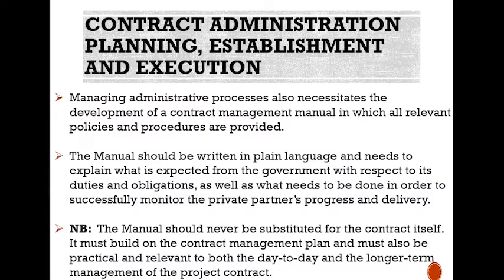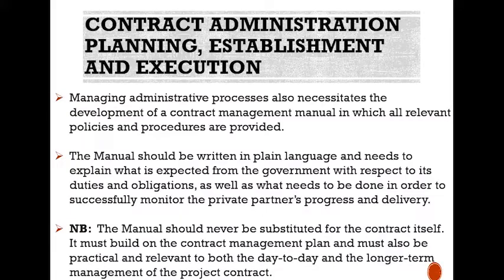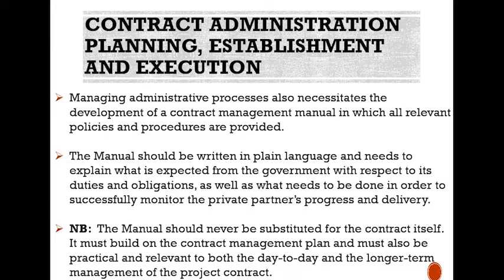Managing administrative processes also necessitates the development of a contract management manual in which all relevant policies and procedures are provided. The manual should be written in plain language and needs to explain what is expected from the government with respect to its duties and obligations, as well as what needs to be done in order to successfully monitor the private partner's progress and delivery. Note: the manual should never be substituted for the contract itself. It must build on the contract management plan and must also be practical and relevant to both the day-to-day and the longer-term management of the project contracts.